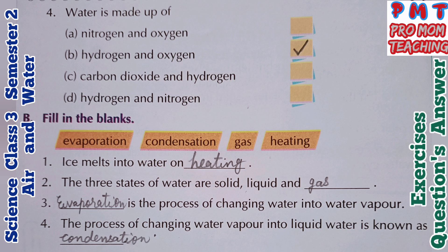Fourth: water is made up of — hydrogen and oxygen (B).